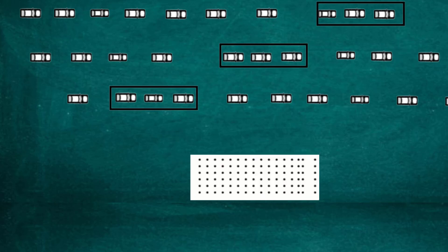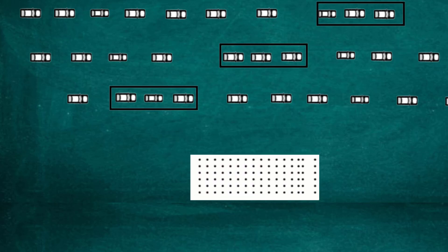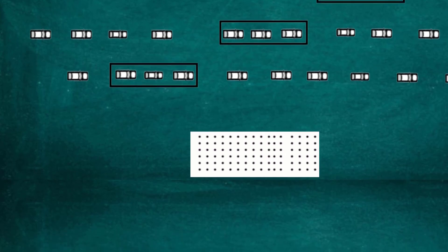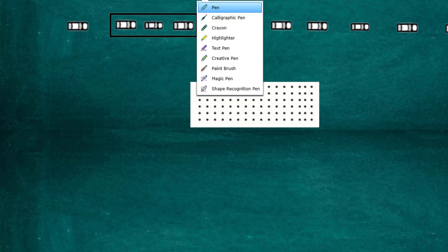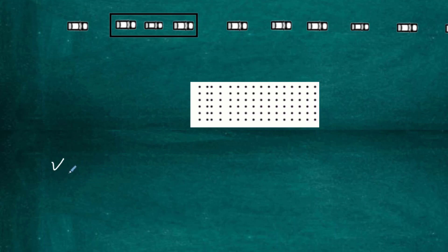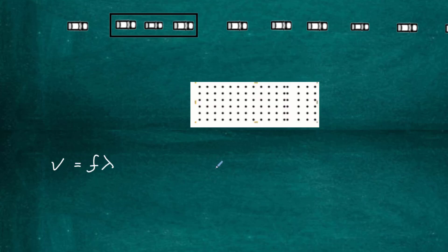We can work out the wavelength of these congestions by looking at what's happening in different parts of the road. We can also work out the frequency, which is one divided by the period — the time it takes for one of these congestions to come and go, then come and go again. So we've worked out both frequency and wavelength, and from that we can work out the speed of the wave: v equals frequency times wavelength, which equals wavelength divided by the period.